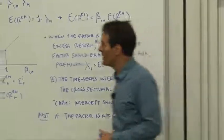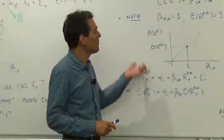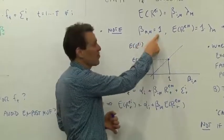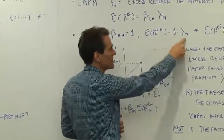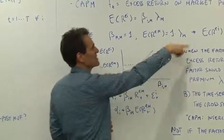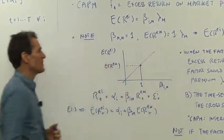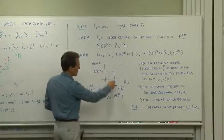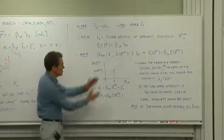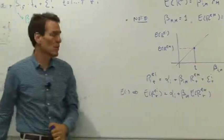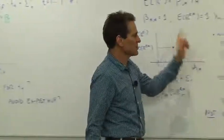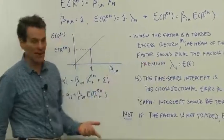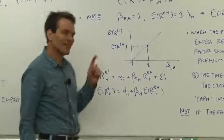In the case of the CAPM, the market return is also a return and should also be priced by the model. The beta of the market on the market is one, so the expected return on the market is beta times the factor risk premium. The theory predicts the factor risk premium is the same as the return on the market. The graph shows the beta of the market on market is one; the expected return of the market is there, so the slope is the same as the expected return on the market. When the factor is a traded excess return, the mean of the factor should equal the factor risk premium.